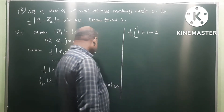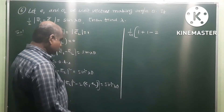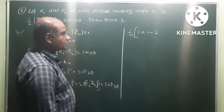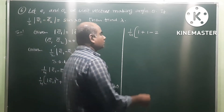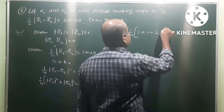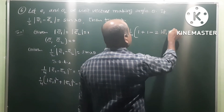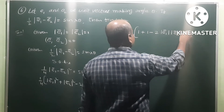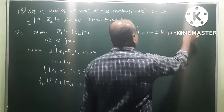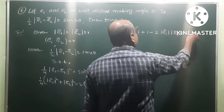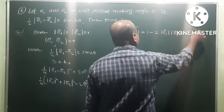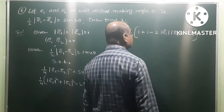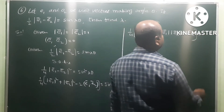Now applying the dot product: e1 dot e2 equals mod(e1) times mod(e2) times cos of the angle between e1 and e2, and that is equal to sin squared(lambda*theta).